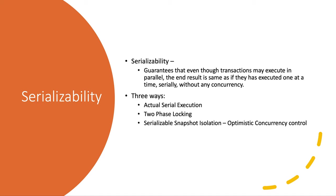In the previous sections of this chapter we have seen various race conditions like lost update, write skews and phantoms, and the solution to all these problems is serializable isolation. Serializable isolation is usually regarded as the strongest isolation level and it guarantees that even though the transactions may execute in parallel, the end result is the same as if they had been executed one at a time serially without any concurrency. Right now there are three ways of serializability: actual serial execution, two-phase locking, and serializable snapshot isolation.